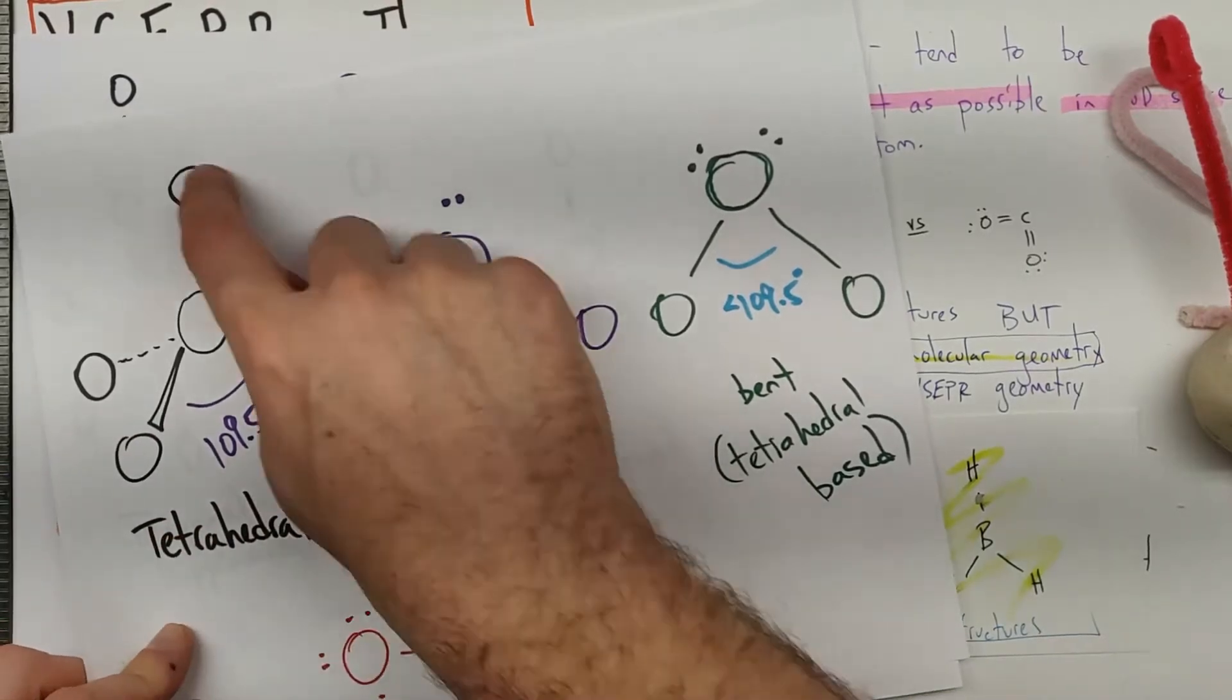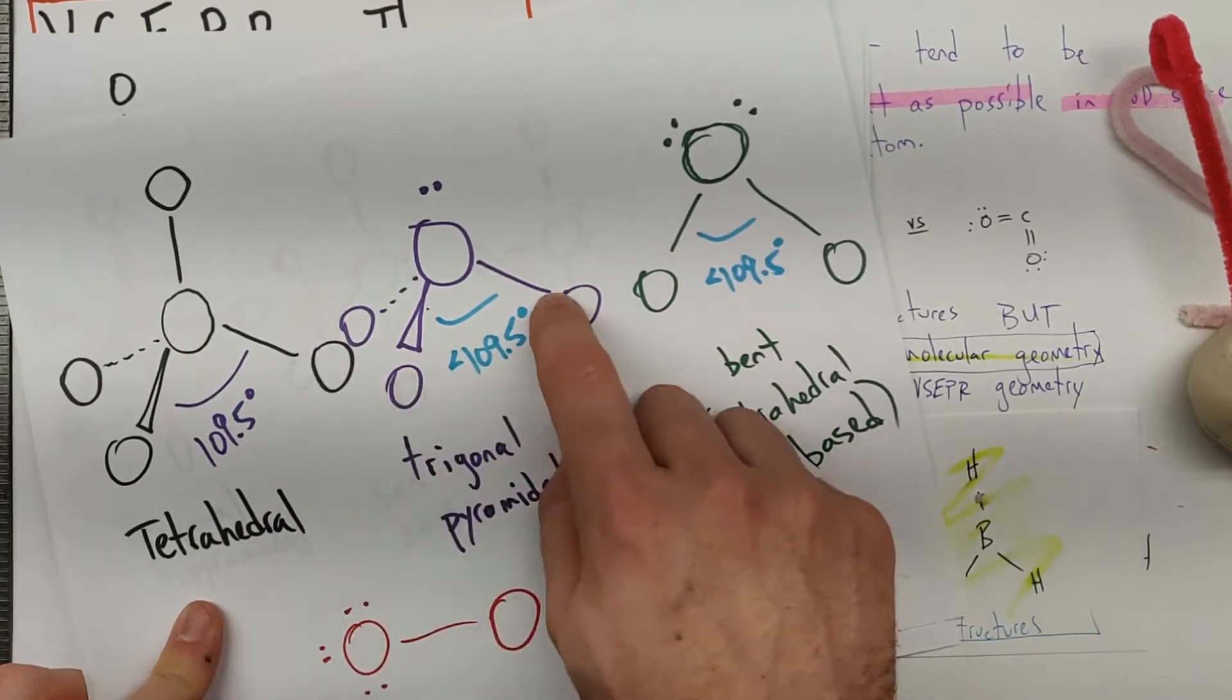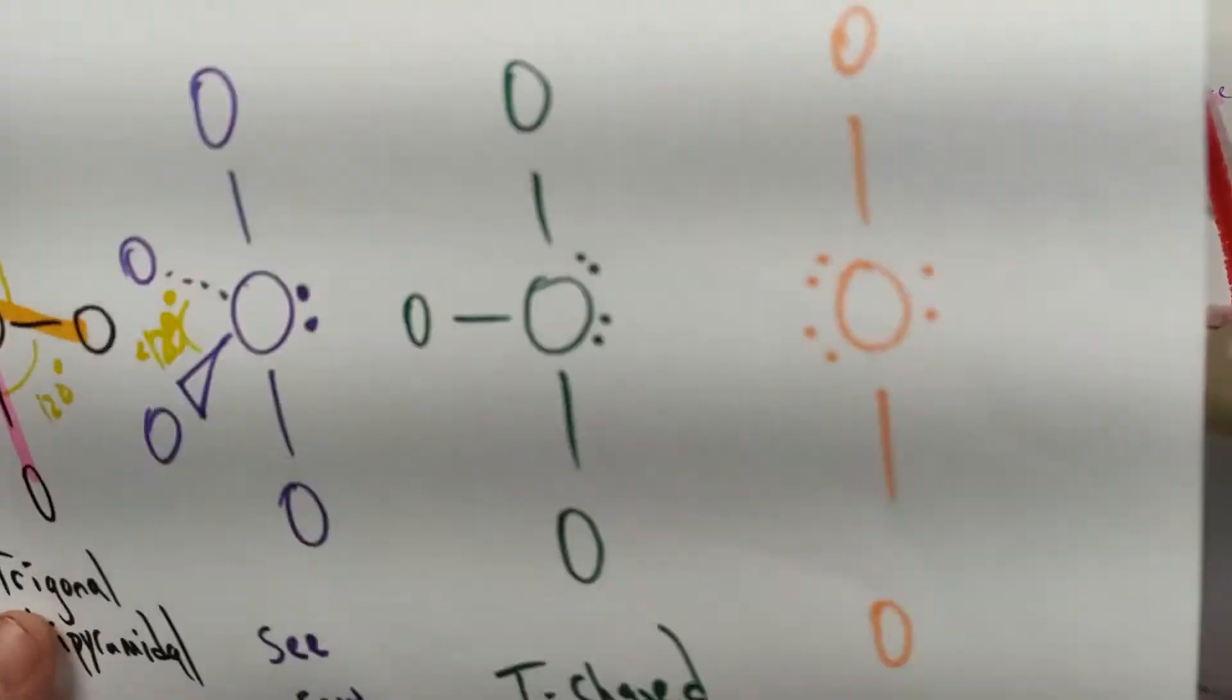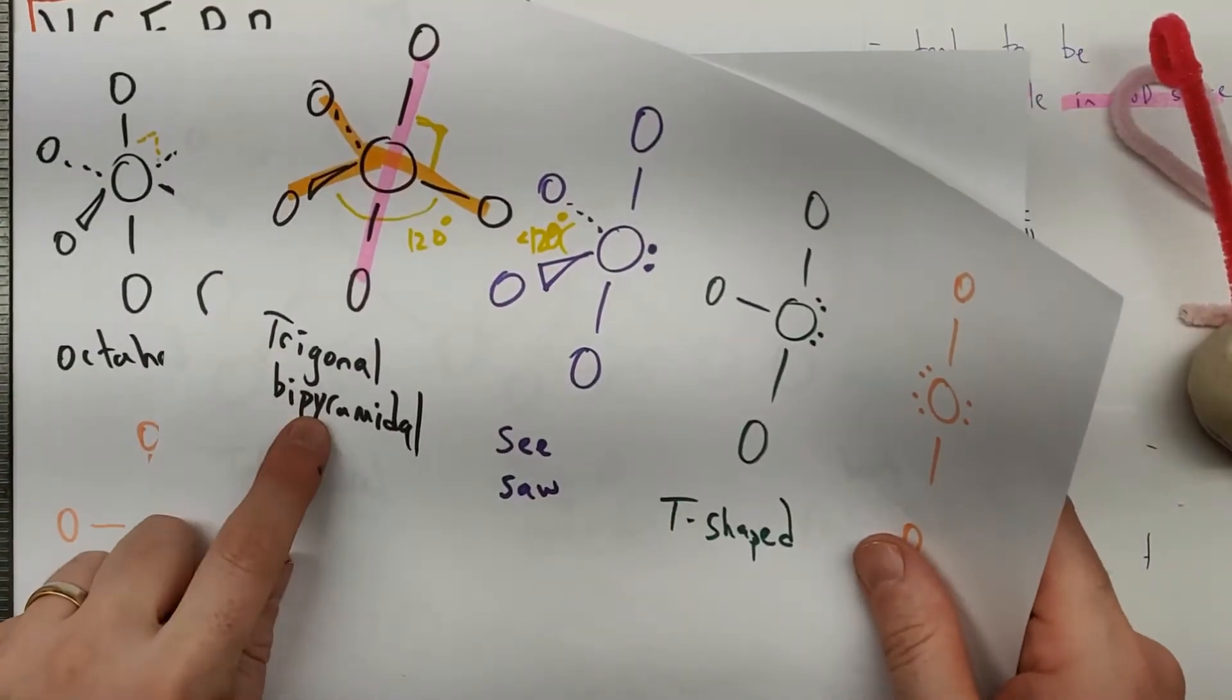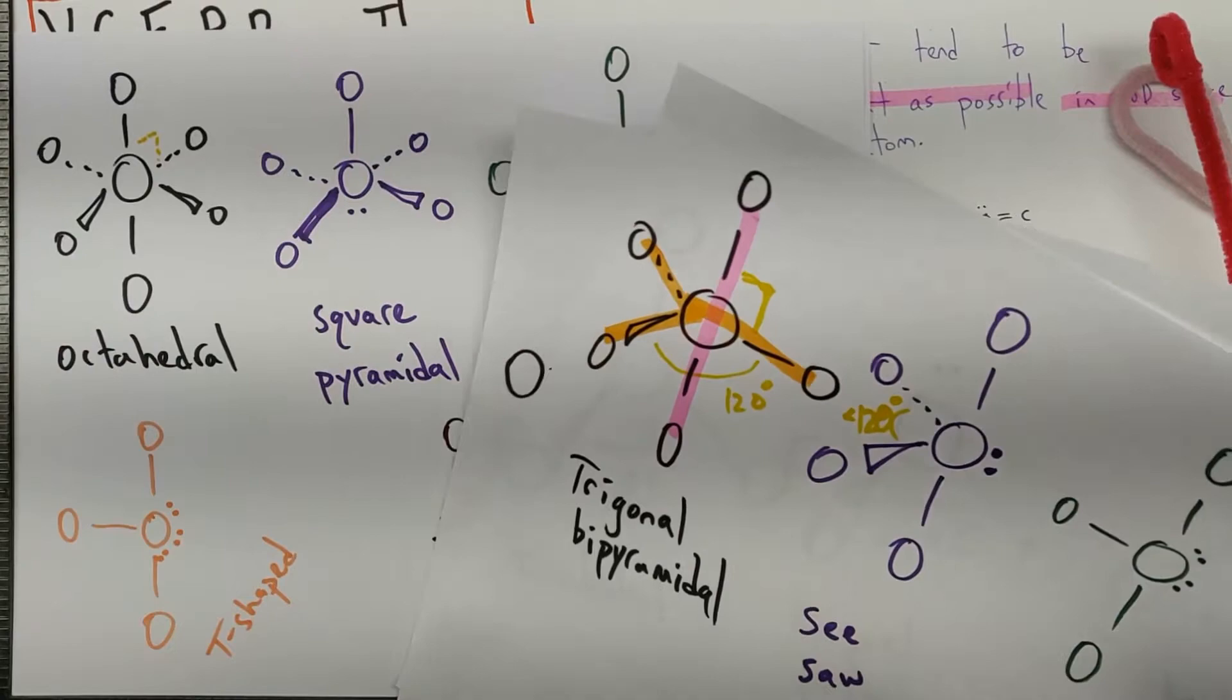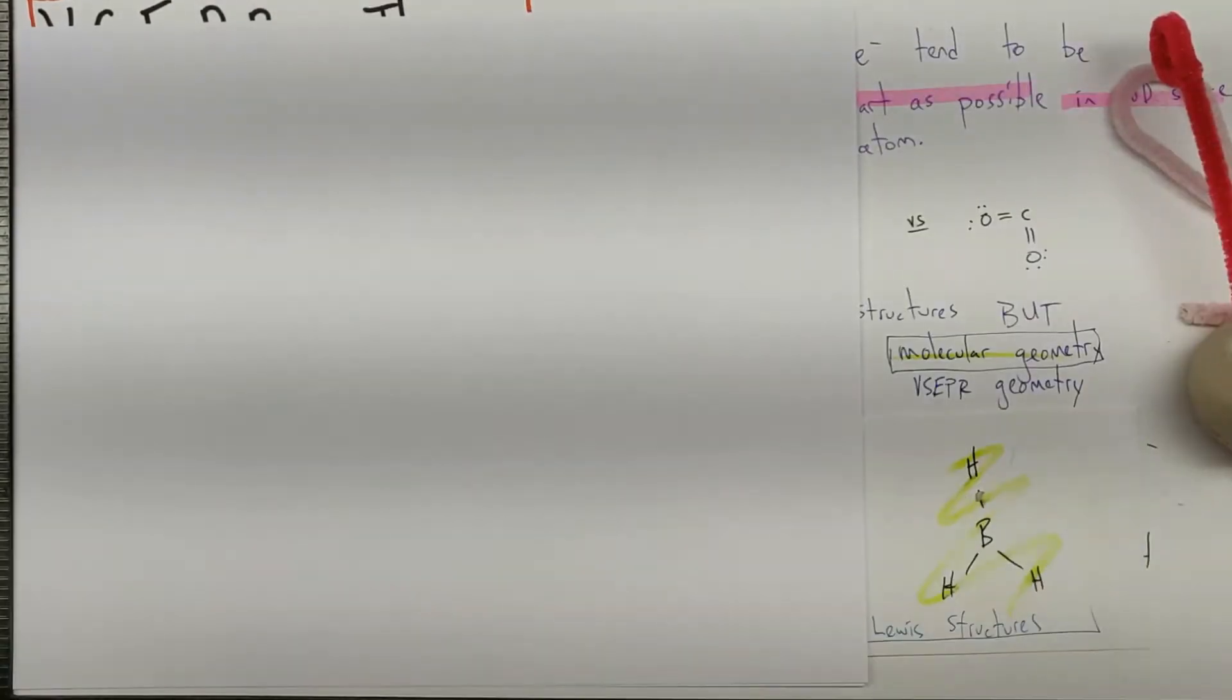When we had four vertices here, we called it tetrahedral. When we had just these three base vertices, we called it trigonal pyramidal. Then we had trigonal bipyramidal, and we even had octahedral, which could have had another name. And I want to kind of run down how that naming makes sense.